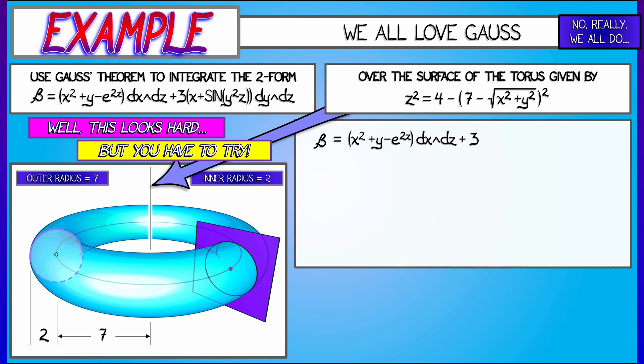So now let's investigate this two-form beta. In order to use Gauss's theorem, we're going to have to differentiate this. So let's take the derivative.